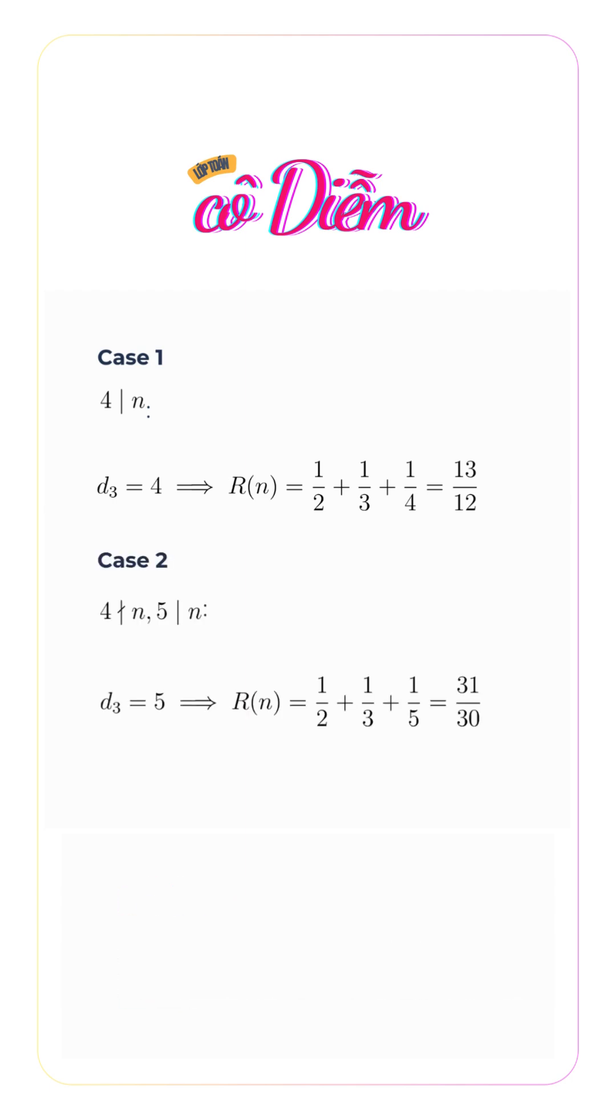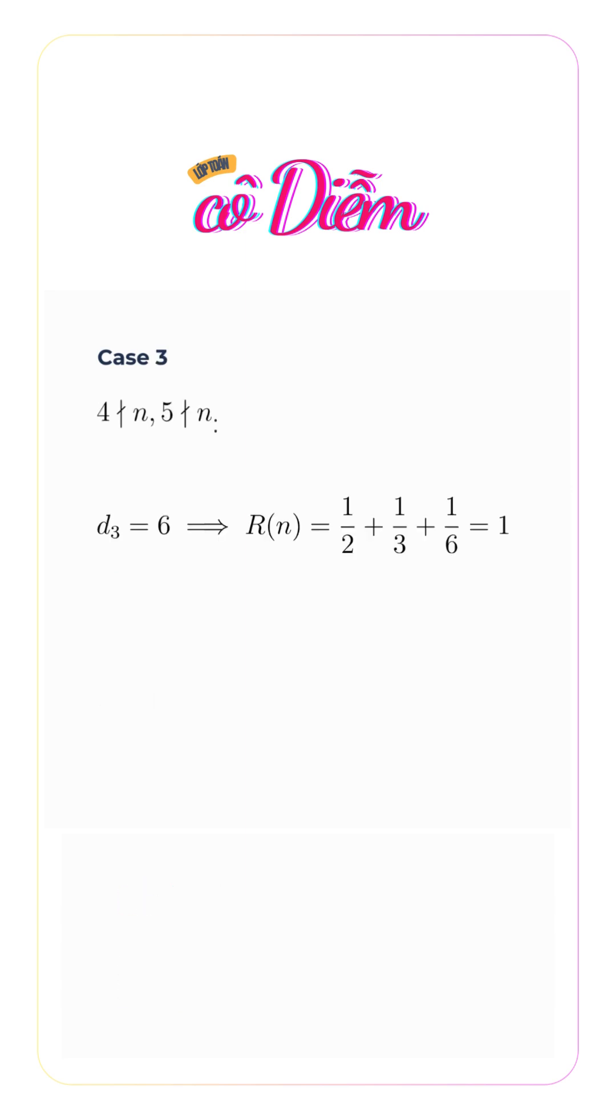If 4∤n but 5|n, then d_3 = 5, and R(n) = 1/2 + 1/3 + 1/5 = 31/30.